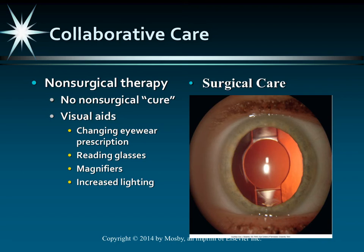Eventually, if the cataract progresses and the lens becomes opaque enough, surgery is necessary. The procedure involves a little sedation and local anesthesia into the eye. A slit is made, the opaque lens is removed, and a new intraocular lens implant is inserted. This is a relatively simple procedure done on an outpatient basis.